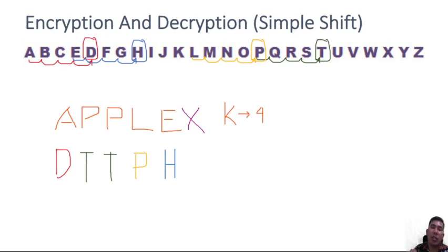Since we shift from X going to Y and Z, then you wrap around to the beginning. So you go back to the first letter, which is A in the English alphabet, and then proceed with the shifting process.